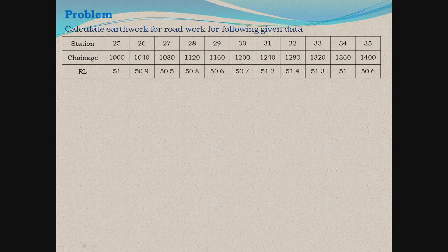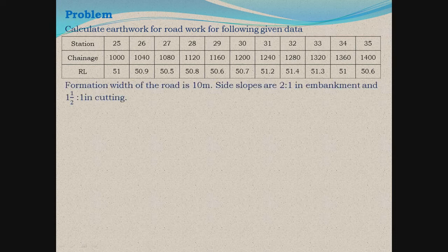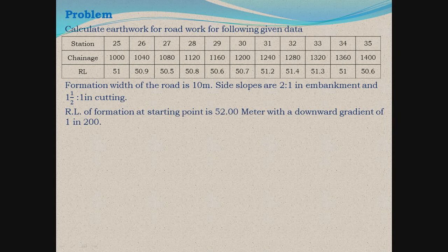The areas of different chainages and the station points are mentioned in the given data. The formation width of the road is given as 10 meters, the side slope is 2:1 in embankment, and 1.5:1 in cutting section. These particular values are very important while calculating the side slopes.